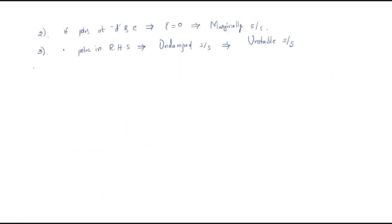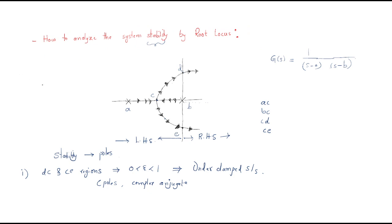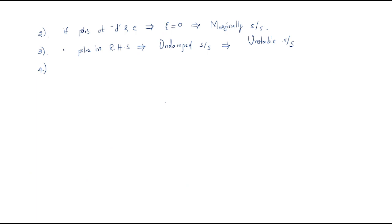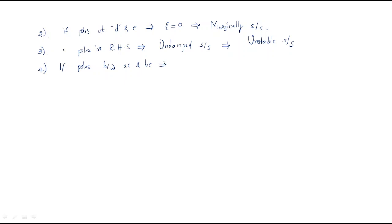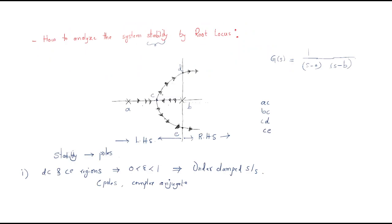The fourth condition is if poles are between regions AC and BC — one pole here and one pole there. If poles are between AC and BC, the damping ratio is greater than one, and the system is an over-damped system.